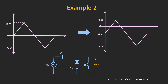Once again, while using this method, we need to ensure that the diode is conducting at least for some duration during the time period. Here, in fact, it is conducting whenever the input waveform is greater than 3V. So in this way, by using this shortcut method, we can easily find the output waveform for the clamper circuit.